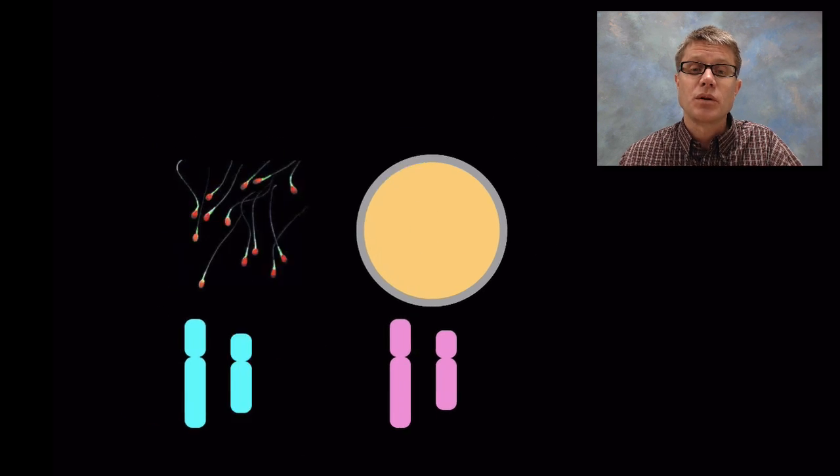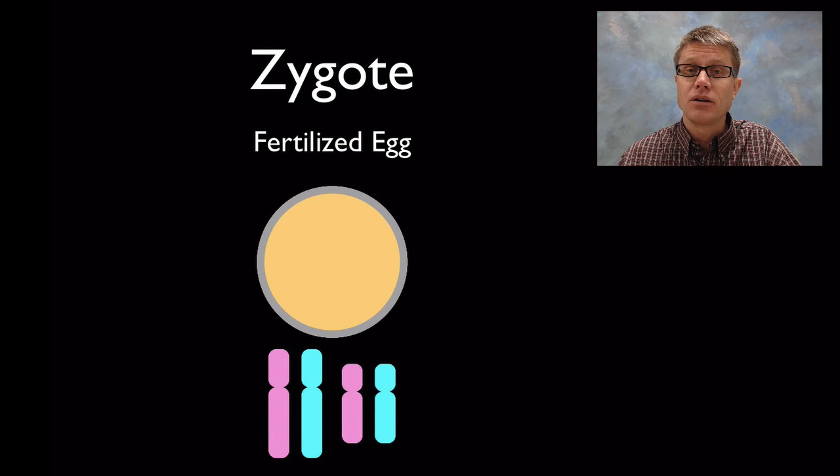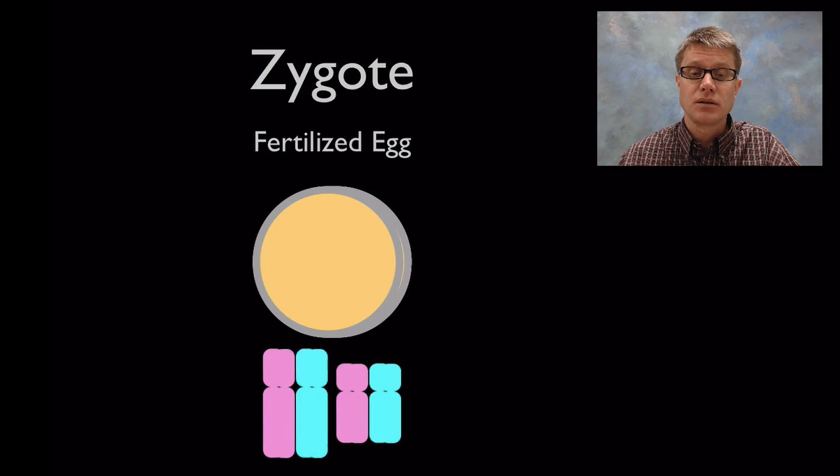So what happens when the sperm fertilizes the egg? We make a zygote. And that zygote is going to be a combination of the chromosomes from the mother and the chromosomes from the father. And you can see that the chromosomes will have different lengths. And we give them numbers. This would be chromosome 1 and this is 2. It's really oversimplified. Most organisms are going to have dozens and dozens of chromosomes. But we eventually have a fertilized egg. And so it's a union of the chromosomes from the male and the female.